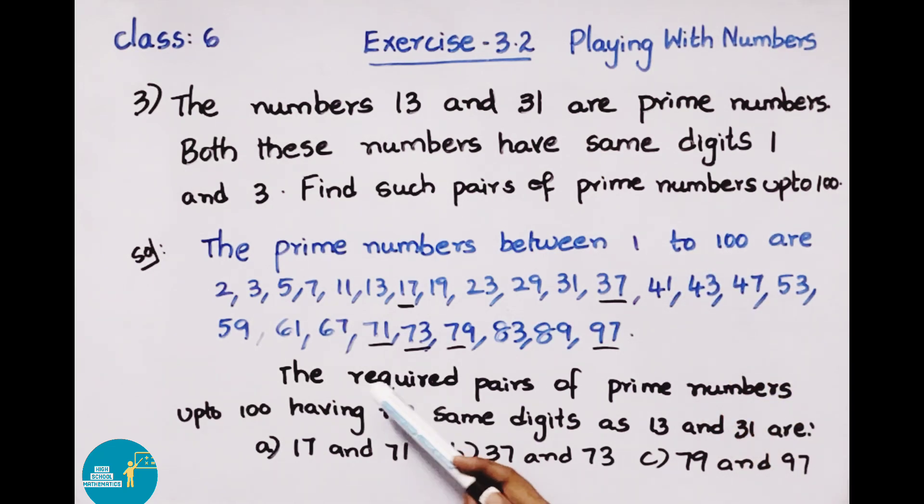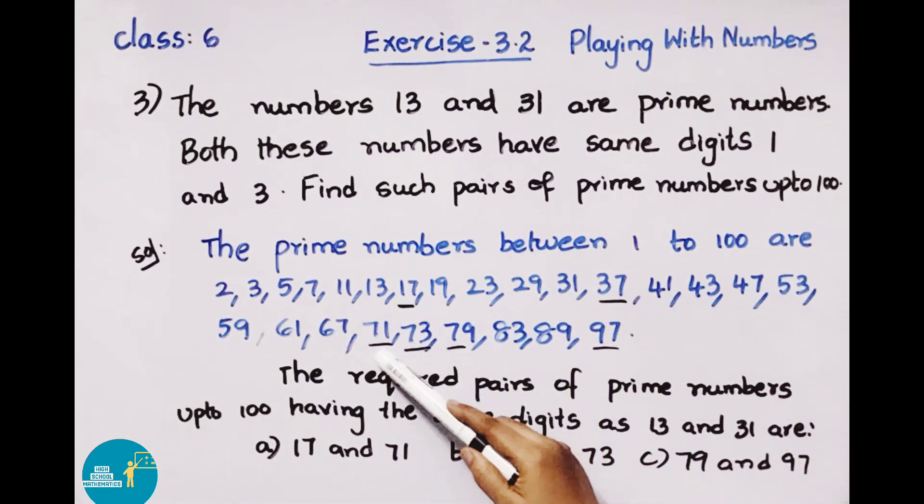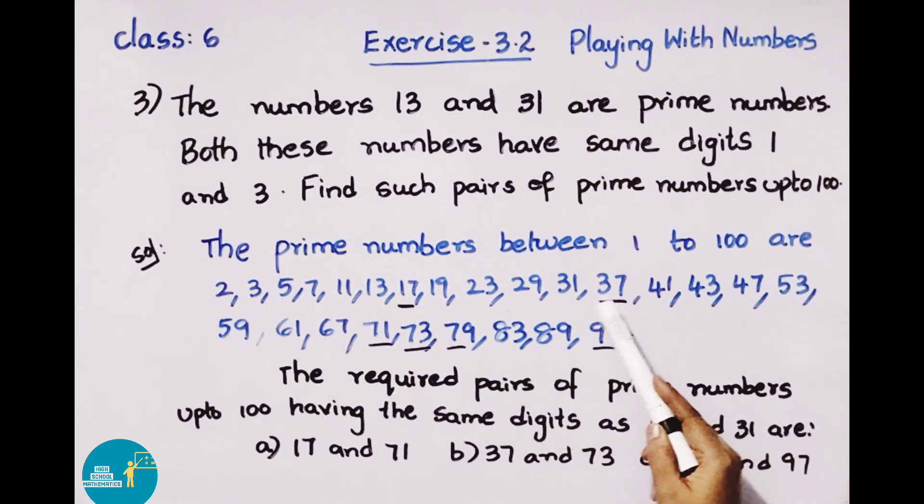The required pairs of prime numbers up to 100 having the same digits as 13 and 31 are: First pair is 17 and 71, second pair is 37 and 73, and third pair is 79 and 97. Therefore, the required pairs of prime numbers are 17 and 71, 37 and 73, 79 and 97.